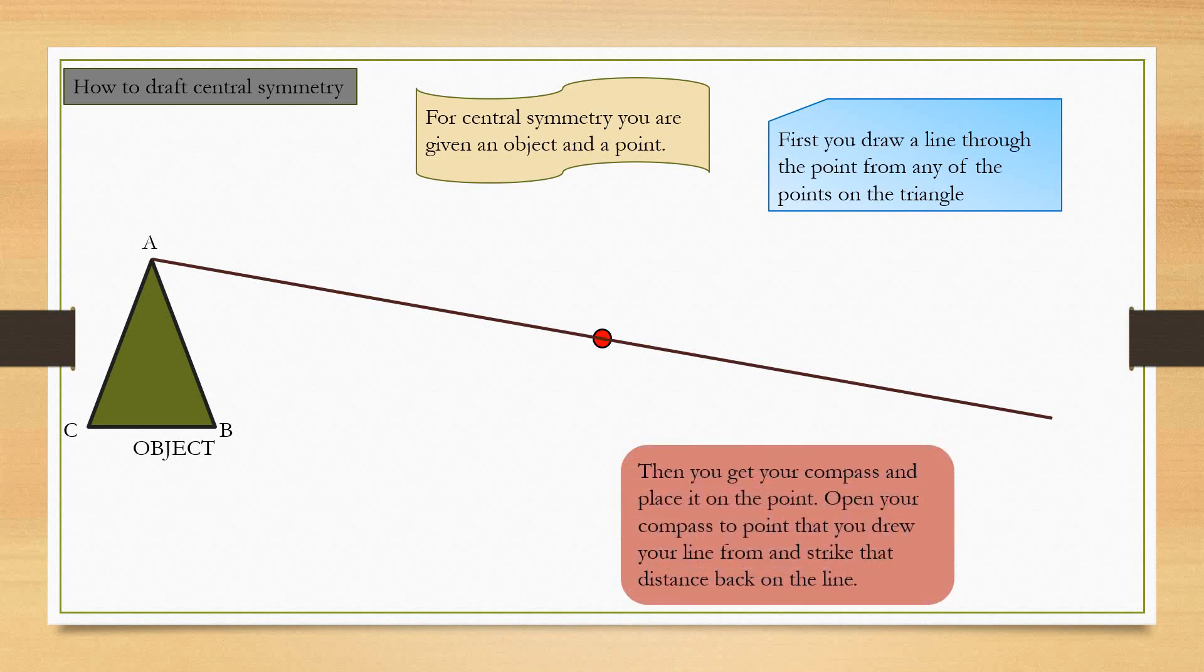Then, you get your compass and place it on the point. Open your compass to the point you drew your line from and strike that distance back on the line. Like this. Put your compass there, open it up to A and strike it back.